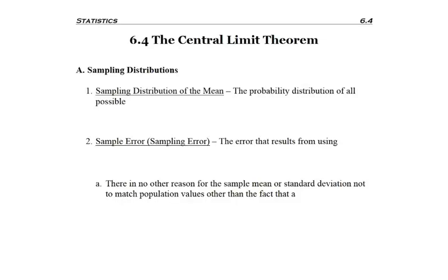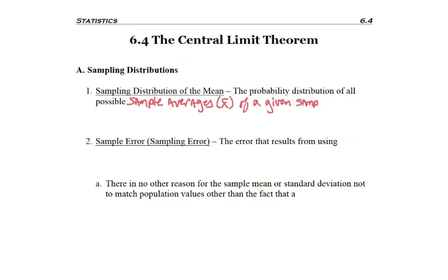Section 6.4 is on the Central Limit Theorem, and this is based off of sampling distributions. The first thing we need to do is define what a sampling distribution is for the mean, because we're going to be focusing on a sampling distribution of the mean. This is a probability distribution of all possible sample averages, which is x-bar, of a given sample size, which we use n to notate.